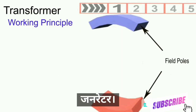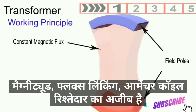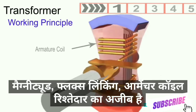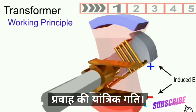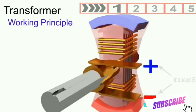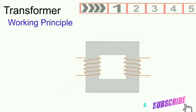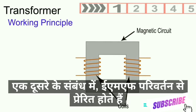In the generator, the flux is substantially constant in magnitude. The flux linking the armature coils is changed by the relative mechanical motion of flux and coils. In the transformer, the coils and magnetic circuit are all stationary with respect to one another.